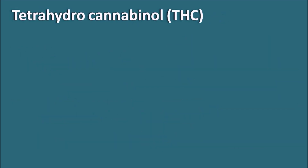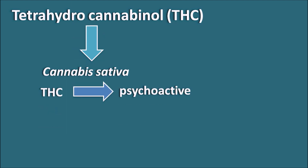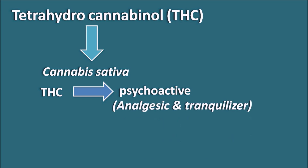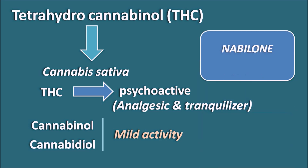Next is tetrahydrocannabinol (THC), coming from Cannabis sativa, commonly called the hemp plant. THC has psychoactive properties and acts as an analgesic and mild tranquilizer. The cannabis plant also contains cannabinol and cannabidiol, which have milder activity compared to THC. A synthetic derivative, nabilone, is not used for psychoactive purposes but is mainly used as an anti-emetic.